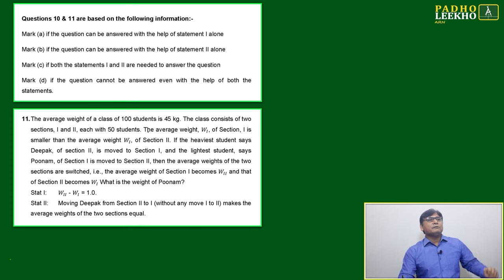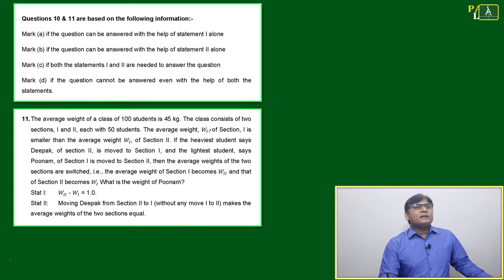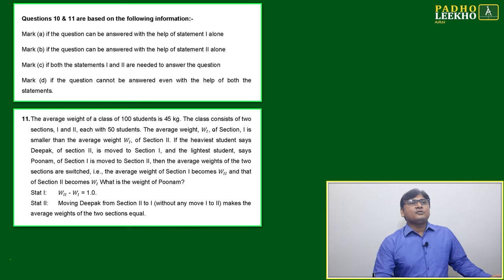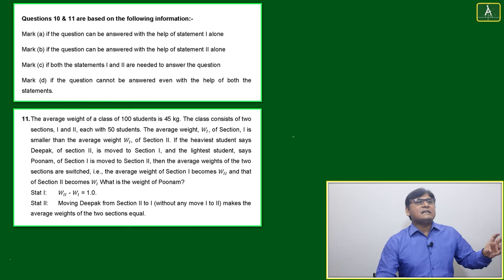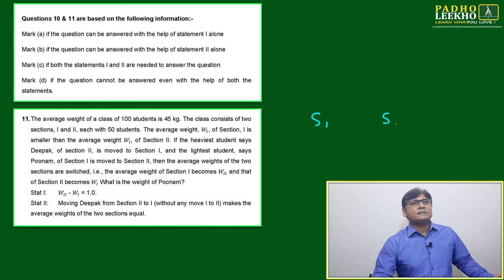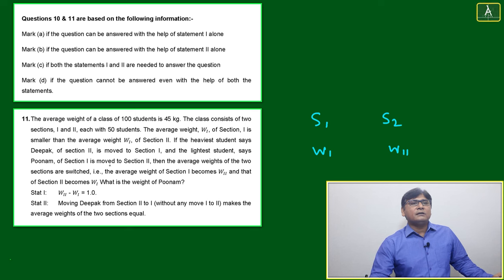Welcome to question number 11. This is a good question from an analysis point of view. The average weight of a class of 100 students is 45. The class consists of two sections — Section 1 and Section 2 — with 50 students each. The average weight of Section 1 is w1 and the average weight of Section 2 is w2.